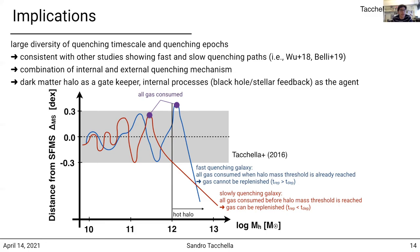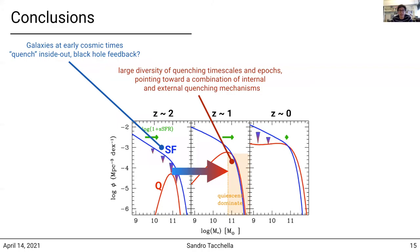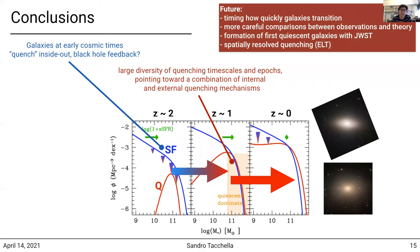In summary, I showed that galaxies at early times quench inside out, possibly related to black hole feedback that quenches galaxies from the centers to the outskirts. At later times, looking at quiescent galaxies around redshift 1, I showed a large diversity of quenching timescales and epochs, which points towards a combination of internal and external quenching mechanisms. There is also the bimodality in the quiescent population between fast and slow rotators that we still need to explain. I'm very excited about the future — measuring quenching timescales for larger galaxy samples and doing more careful comparisons between observations and theoretical models.